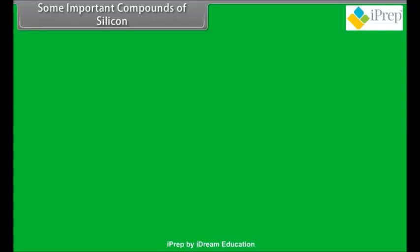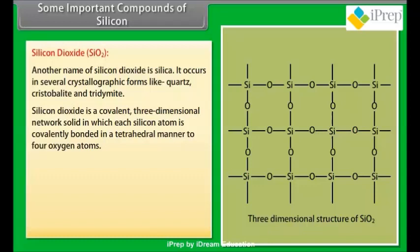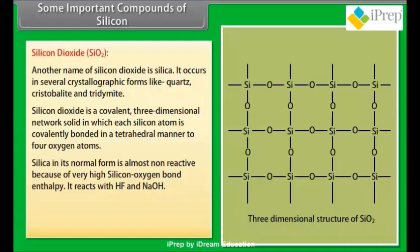Some important compounds of silicon. Silicon dioxide: another name of silicon dioxide is silica. It occurs in several crystallographic forms like quartz, cristobalite, and tridymite. Silicon dioxide is a covalent three-dimensional network solid in which each silicon atom is covalently bonded in a tetrahedral manner to four oxygen atoms. Silica in its normal form is almost non-reactive because of very high silicon-oxygen bond enthalpy. It reacts with HF and NaOH.